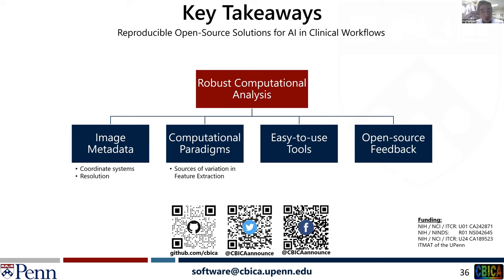Question: using the federated learning framework, can I test how my model performs without using other institutes' data — for external validation? Yes. If you're the experiment owner, you can define a holdout — for example, keep 10% or 20% of your data hidden from the training set. At the end of each iteration, validation metrics are generated on that holdout set. Even if you don't want to join a federated network, you can use the FETS tool or GaNDLF to do training on only your own data without joining a network.